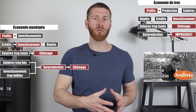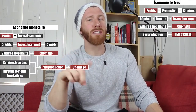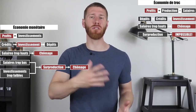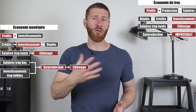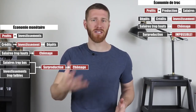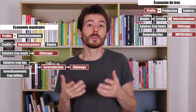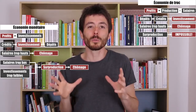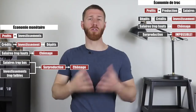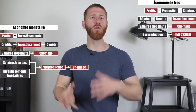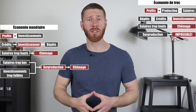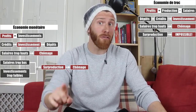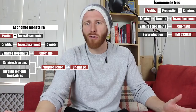This means economists advising policymakers using barter-economy models will recommend stimulating savings to stimulate investment — whereas in a monetary economy that's wrong. Instead, you need to stimulate consumption and encourage banks to create money for investment. Similarly, barter-model advice on unemployment is to lower wages. But if unemployment stems from overproduction, reducing it actually means raising wages, increasing social benefits, and boosting public investment to restart consumption. So: two completely opposite policy prescriptions, depending on which model you use.